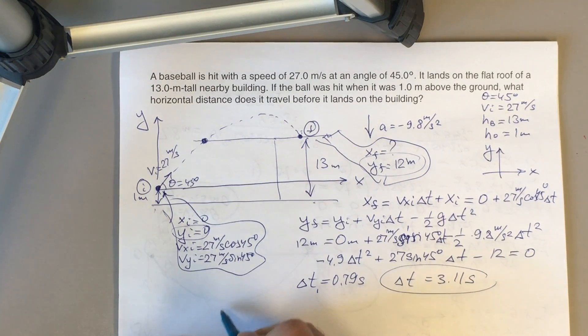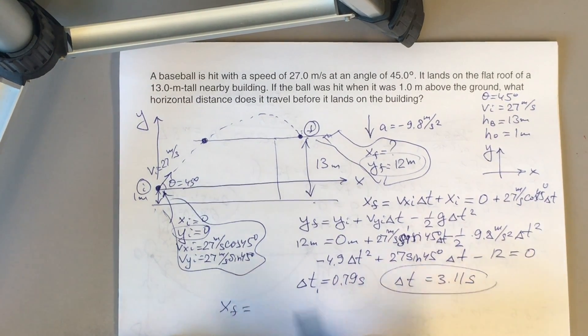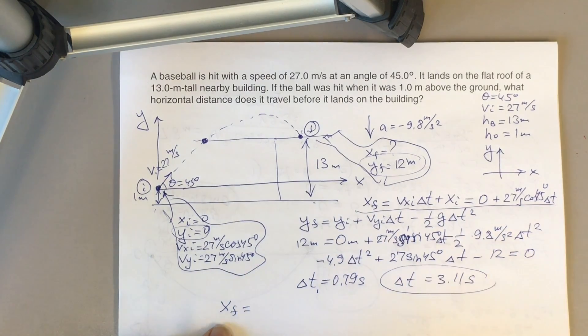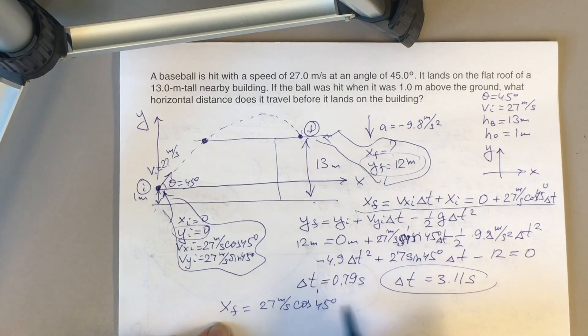So the rest is technical. You have to grab your delta t and plug it into the equation for horizontal motion. So it would be 27 meters per second times cosine 45 degrees times 3.11 seconds.